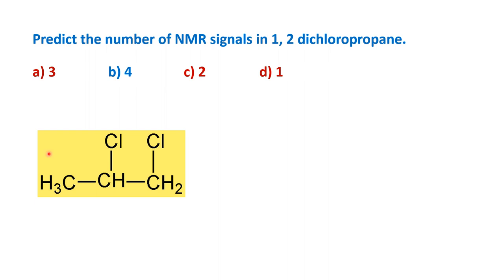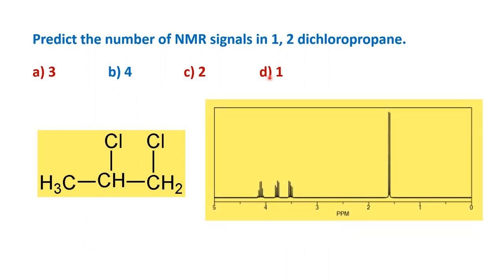We know 1,2-dichloropropane has this structure, and immediately the tendency of students is to see that there are three different types of protons, so the signals will be three. But the answer is four. The spectrum shows four signals and they are all multiplets — a doublet, a multiplet, a multiplet, a multiplet. So there are four signals for this particular molecule.